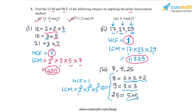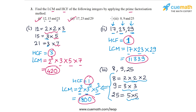The LCM is 2 cubed into 3 squared into 5 squared, or 8 into 9 into 25, which equals 1800. For the third set of integers, the HCF is 1 and the LCM is 1800. That completes part 3, and this is how you can solve question number 3.